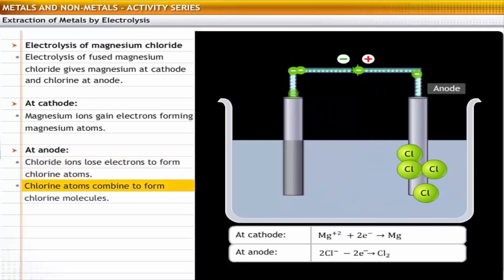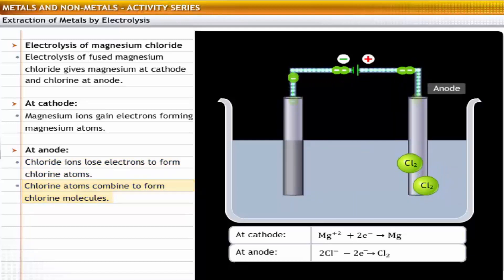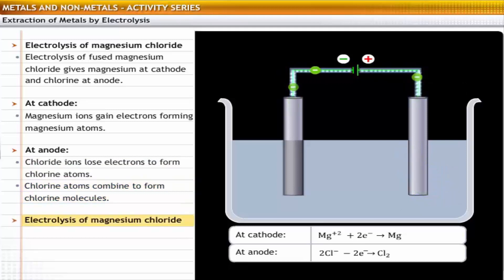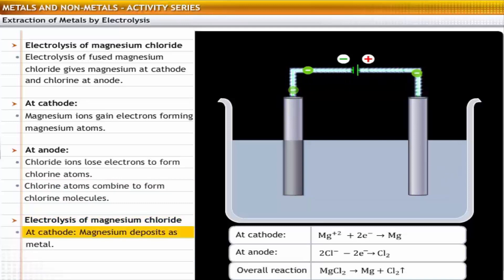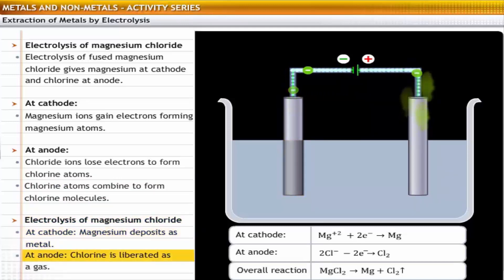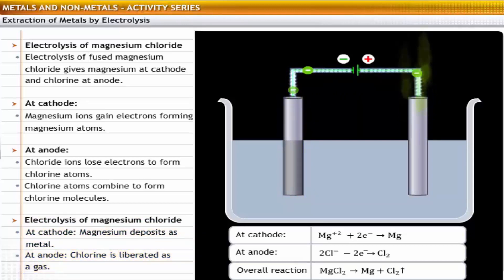Chlorine atoms combine to form chlorine molecules. Thus, as a result of electrolysis of magnesium chloride, magnesium metal is deposited at the cathode and chlorine is liberated as a gas at the anode.